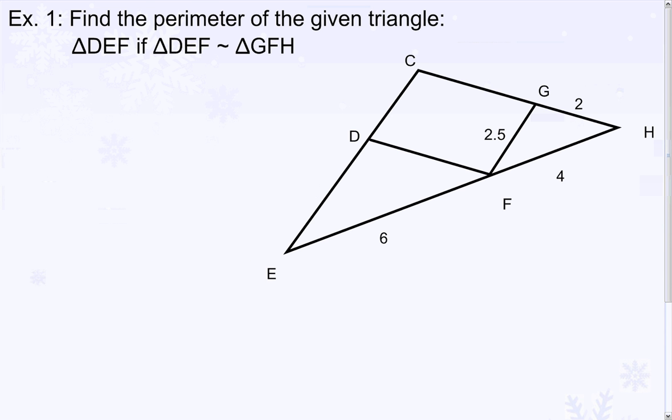In this problem, we're going to find the perimeter of triangle DEF, which is this small inset triangle. We are told that DEF is similar to GFH. Knowing that they are similar...